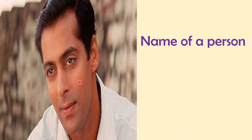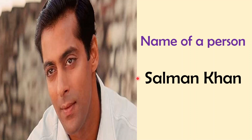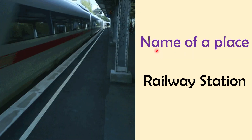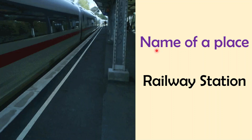Let's learn with examples. Whose picture is it? Here is Salman Khan. Salman Khan is the name of a person, so we call it a noun. Name of a place — it is a railway station. Like railway station, airport, bus stations — the name of a place is a noun. Point number three: name of a thing — it is the Taj Mahal. Taj Mahal is the name of a thing, so we call it a noun.